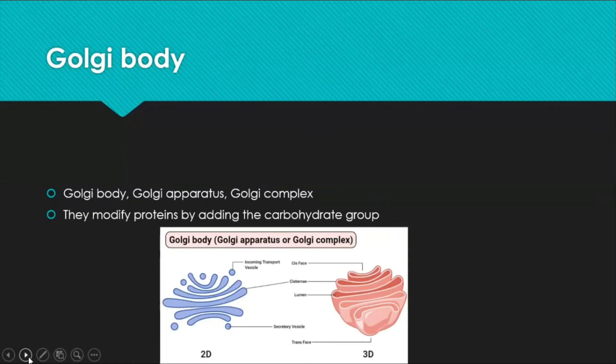The Golgi body — also known as the Golgi apparatus or Golgi complex — looks like a folded structure. Its function is to modify proteins by adding a carbohydrate group to them. An important note: the image of the Golgi body is shown in both 2D and 3D form, and you will usually be asked to identify the 3D form.